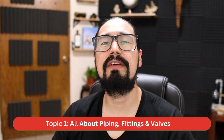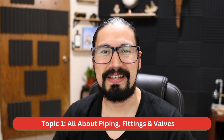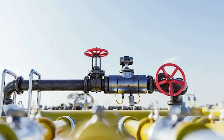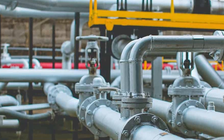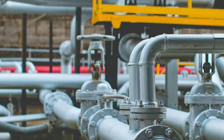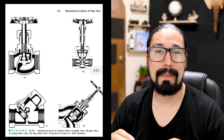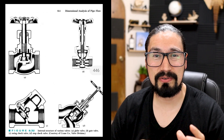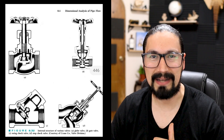What topics are we going to be covering? We get started with the fundamentals of piping, fittings, and valves — what are they, how do they work, and what are the different types we have in the industry. We also cover the different standards that we use, specific valve systems, and the different accessories and fittings used throughout a piping layout.